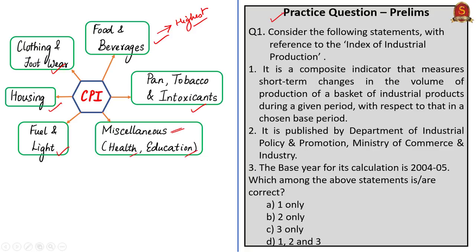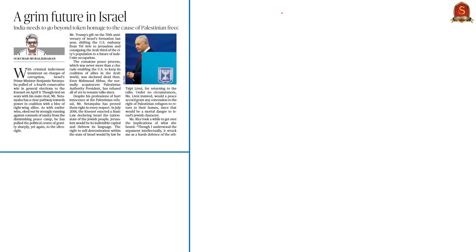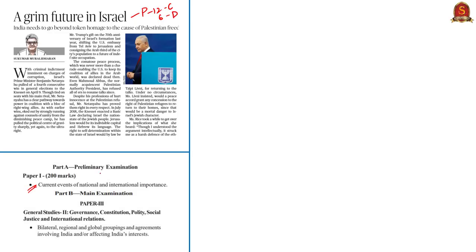The practice question will be discussed at the last section. Moving on to the next article, which appears on page 12 of Chennai edition and page 6 of Delhi edition. This article is relevant under current events of national and international importance in the preliminary examination syllabus, and in GS Paper 2 of the main syllabus under bilateral, regional and global groupings and agreements involving India, and effects of policies and politics of developed and developing countries on India's interests.